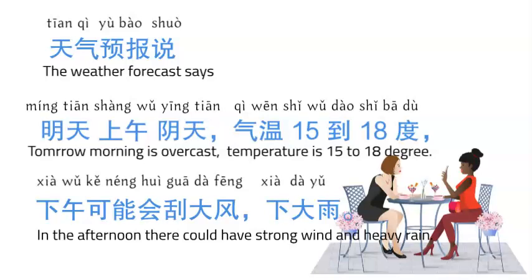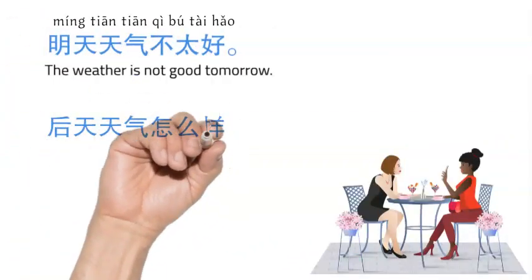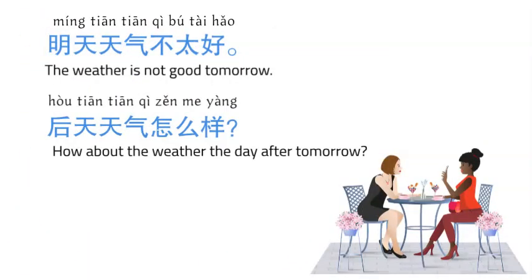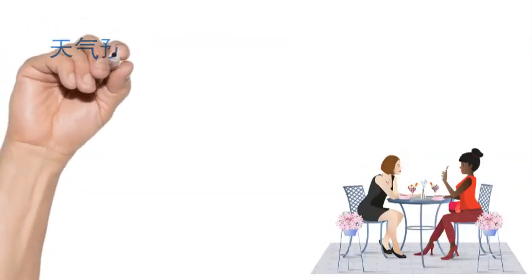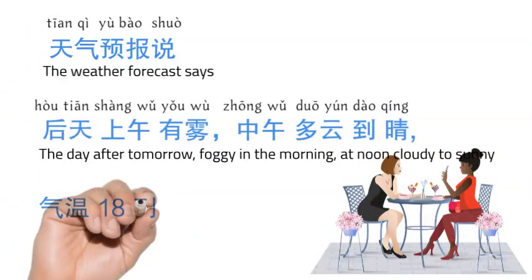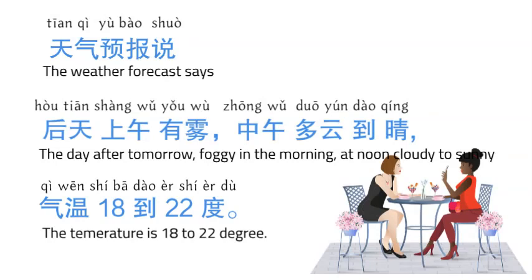明天天气不太好。后天天气预报说，后天上午有雾，中午多云到晴，气温18到22度。后天天气好！那我们后天下午去吧。